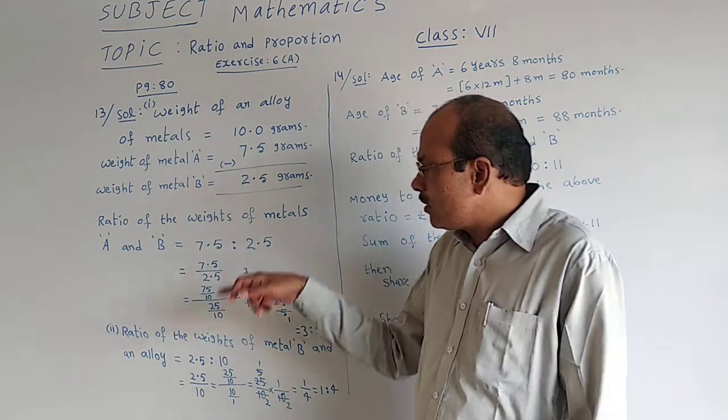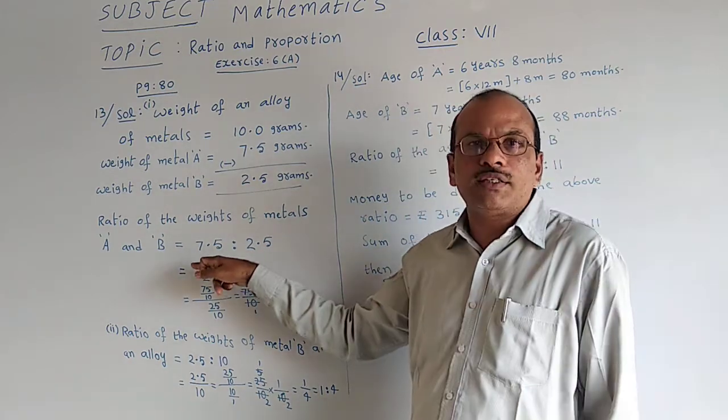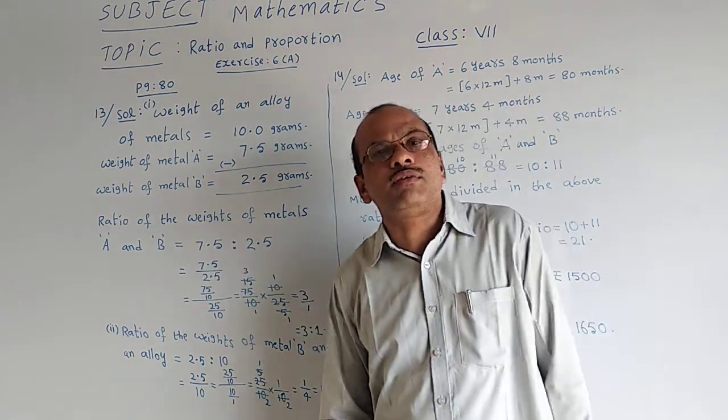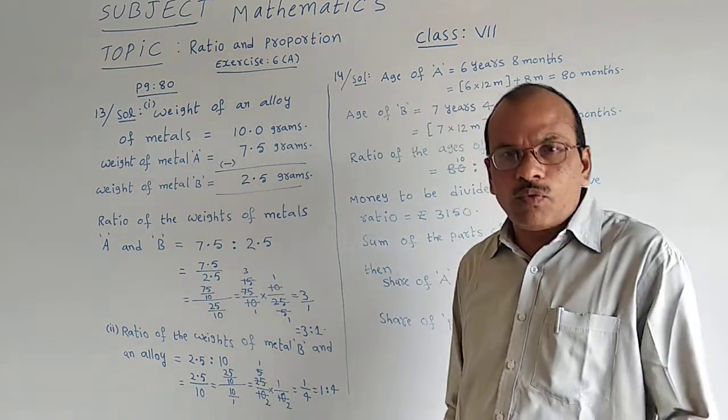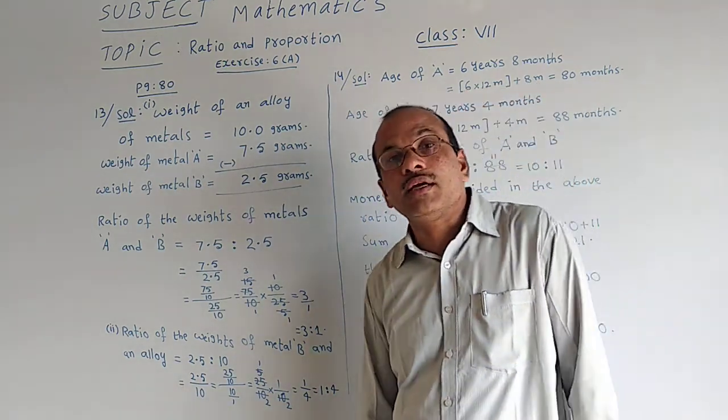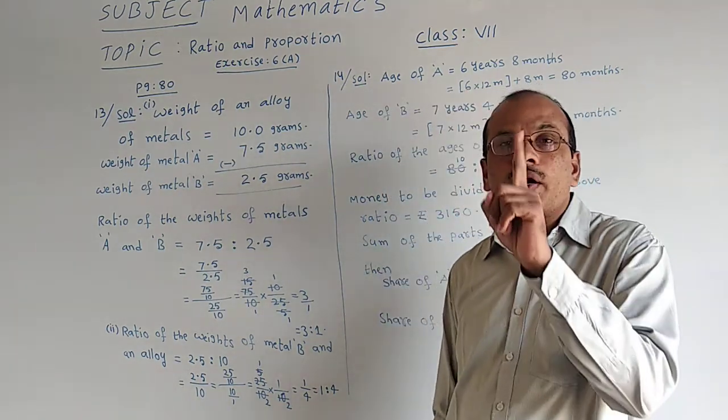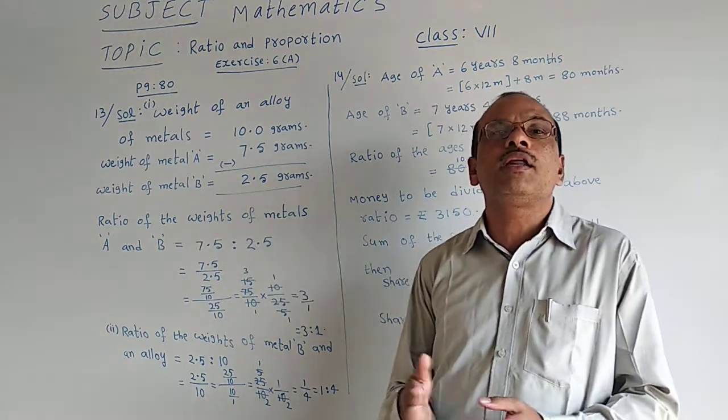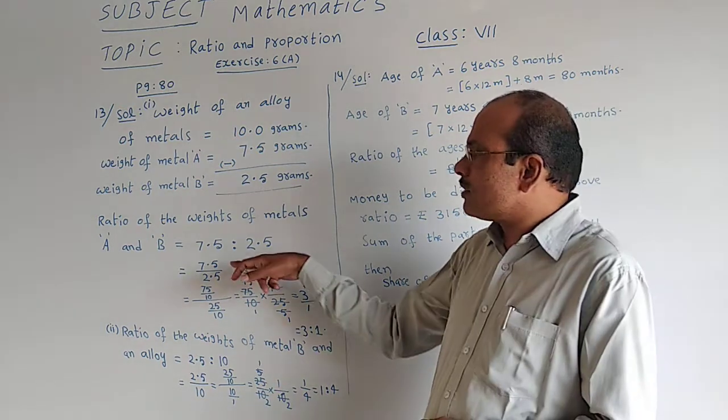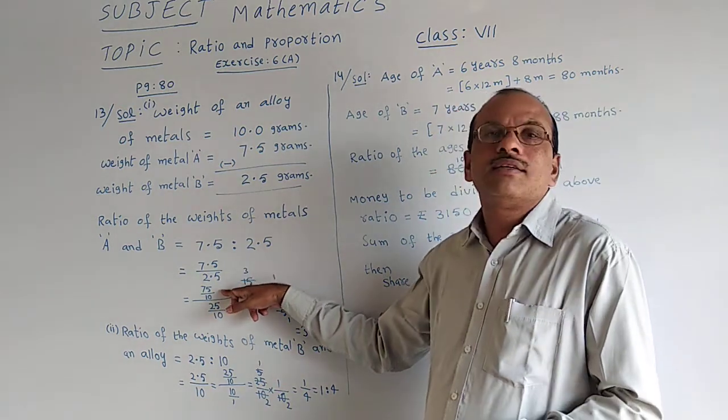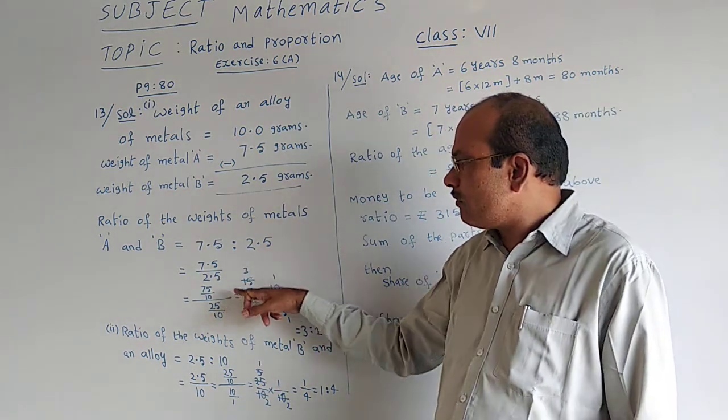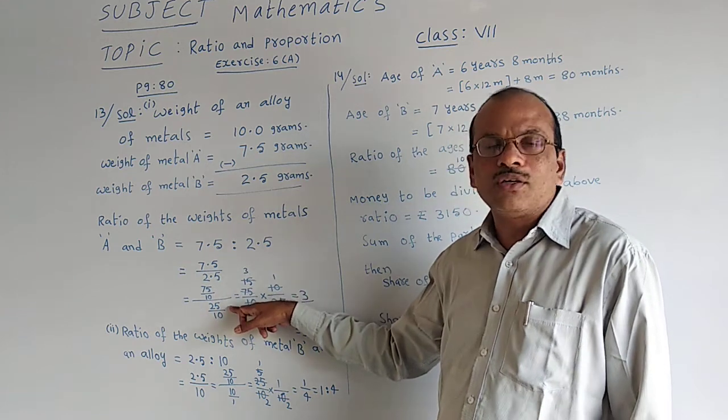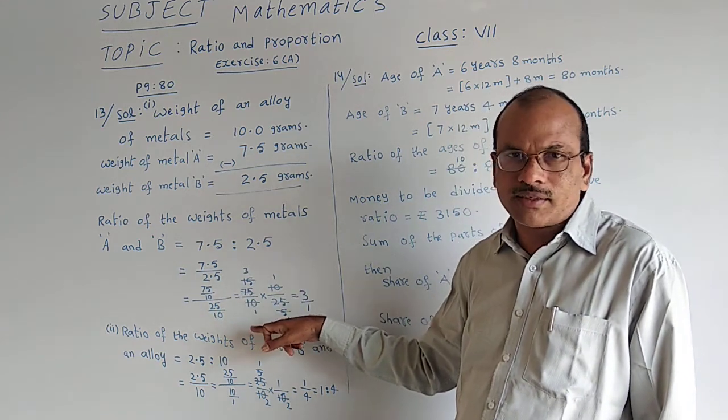So 7.5 changed as 75 by 10 in the numerator, and 2.5 changed as 25 by 10. We know that when the point is there after 1 digit, to remove that point we have to place 10, which is having 1 zero in it. Then the point which is after 1 digit can be removed. That is what 7.5 changed as 75 by 10, same way 2.5 changed as 25 by 10.